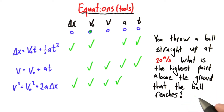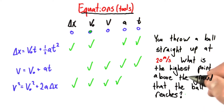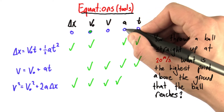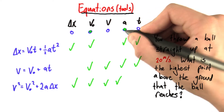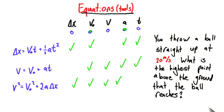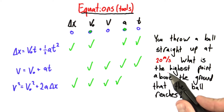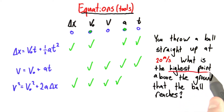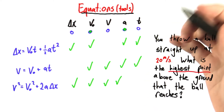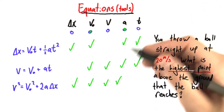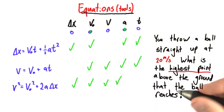Since this is a problem taking place on Earth and the object is in free motion, the acceleration is 10 meters per second squared. But then I'm sort of stuck — what is the highest point above the ground that the ball reaches? The highest point seems important, but I'm still a little confused, and without a picture I'm not going to make much progress in this question.